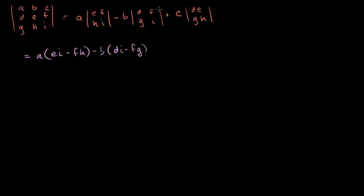Minus FG. And this is going to be plus C times DH minus EG. And if we multiply this out, we get this as being equal to AEI minus AFH minus BDI plus, right, minus times a minus.